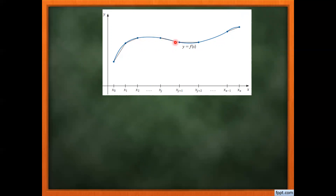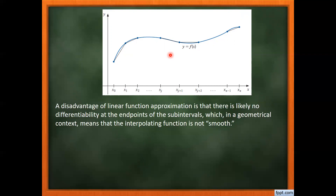In some regions the approximation is good if that portion is actually a straight line, but if it's a curved path, the approximate value and the actual curve are different. So linear approximation is not a good choice when we have a curved graph. Another disadvantage of piecewise linear interpolation is that there is likely no differentiability at the endpoints of the subintervals, meaning the interpolating functions are not smooth.